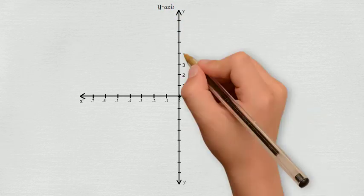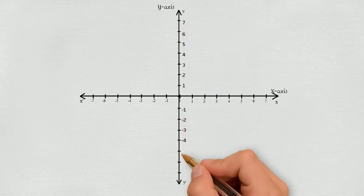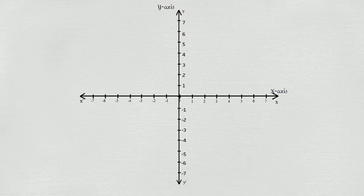We have positive values above origin, and negative values below origin. Now we can use two numbers, x and y, to mark any position on the paper.